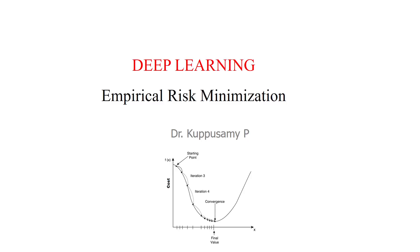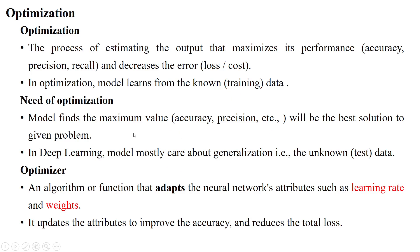Welcome to the session on empirical risk minimization. Here we should know the basic terminologies for calculating the empirical risk for a given problem statement. Optimization is the process of estimating the output that maximizes the performance of the given model in terms of accuracy, precision, and recall, while the model decreases the error — also called loss or cost. In optimization, the model is learning the patterns from known data, called the training dataset or observed dataset.